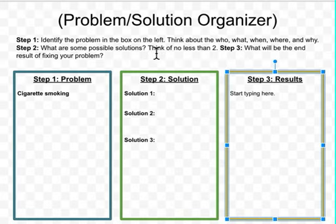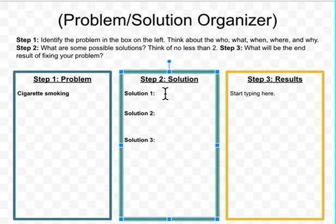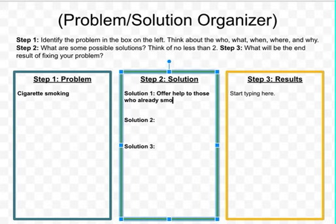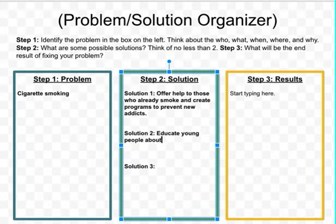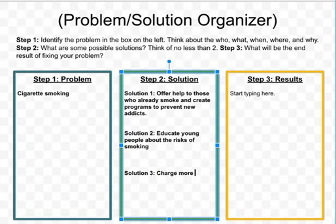The next step in our organizer is to identify what are some possible solutions — this is where you're really doing some brainstorming. How can we fix this problem? The first solution might be to offer help to those who already smoke and create programs to prevent new addicts. Another solution might be to educate young people about the risks of smoking. A third possible solution is to charge more for cigarettes so they're not so easily accessible.